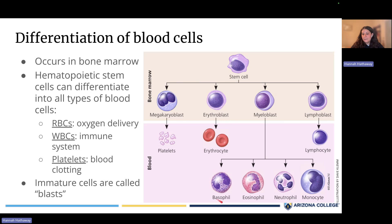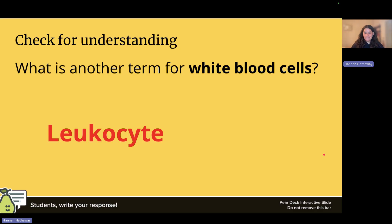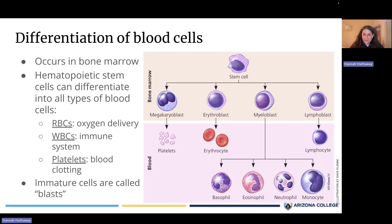The five types of white blood cells are basophils, eosinophils, neutrophils, monocytes, and lymphocytes. You should recognize all of these as white blood cells. You also need to know what platelets are and what erythrocytes — more commonly called red blood cells — are.